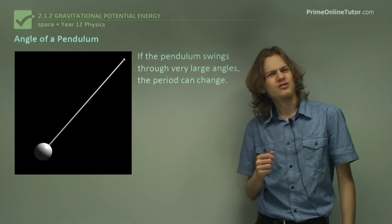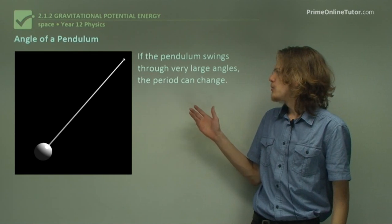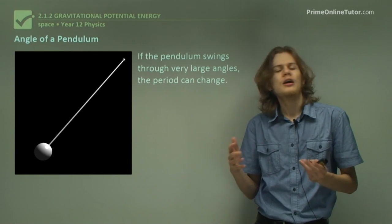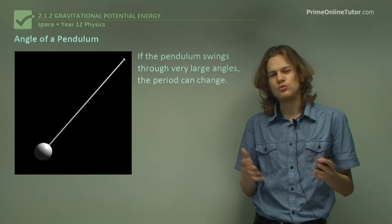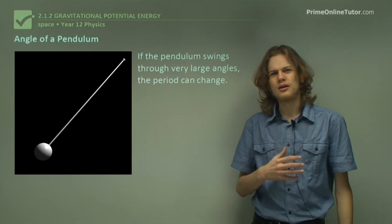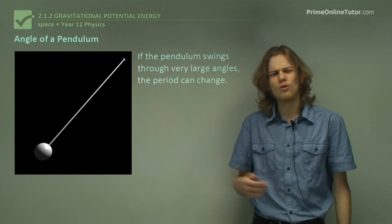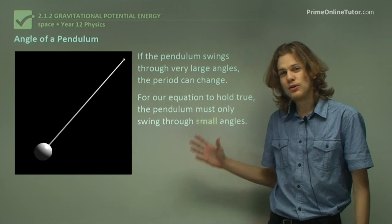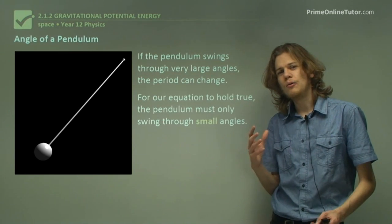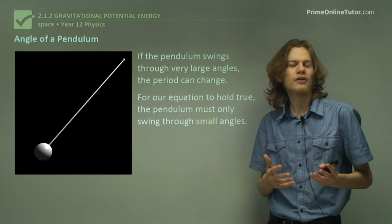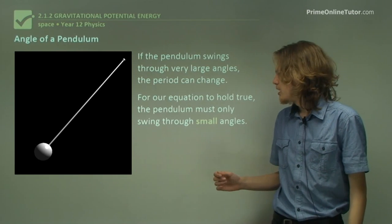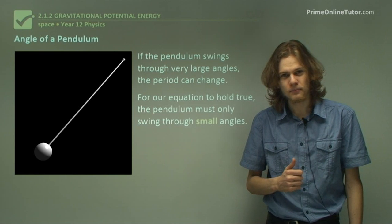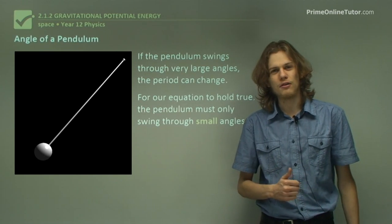It turns out that this isn't always true. If we have the pendulum swinging through a very large angle, then we need an adjustment to our equation and it becomes a lot more long and complicated. So this means that if we want to use our equation to calculate gravitational acceleration, we're going to need to use only small angles in order to swing the pendulum back and forth.